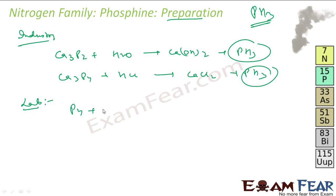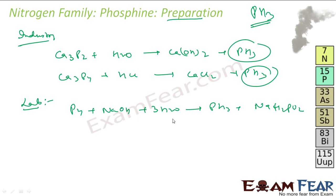In the lab, you can also prepare Phosphine. You take white Phosphorus and mix with sodium hydroxide and water — you get PH3 and NaH2PO2, that is sodium hypophosphite. This reaction should happen in an inert CO2 atmosphere, and the sodium hydroxide should be concentrated. You can write the balanced reaction for this.